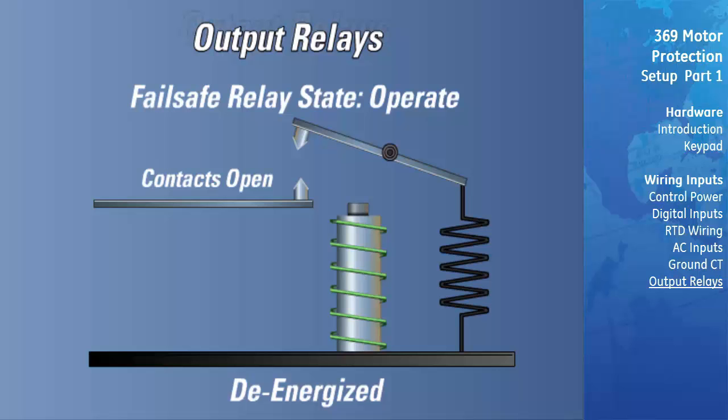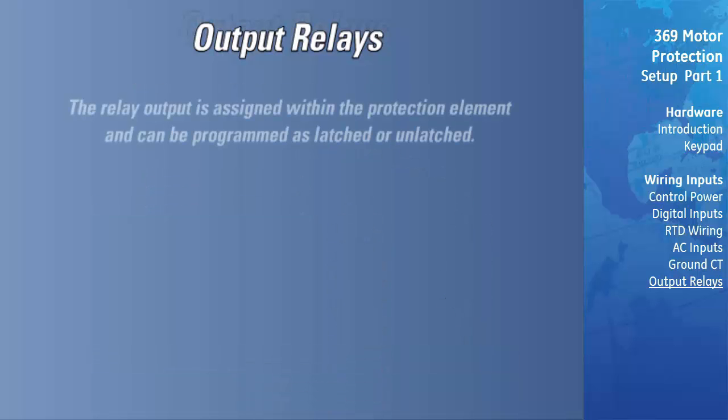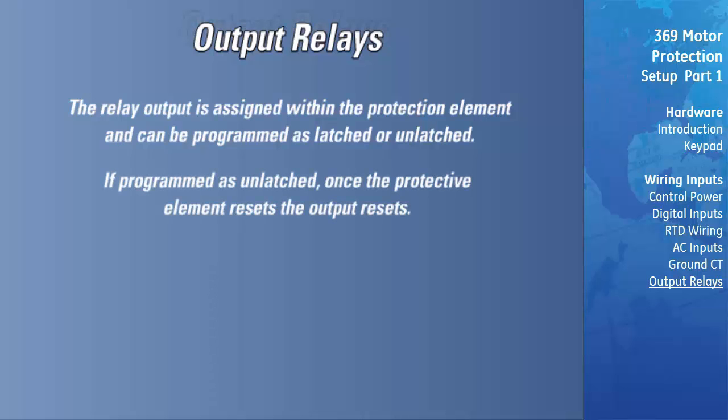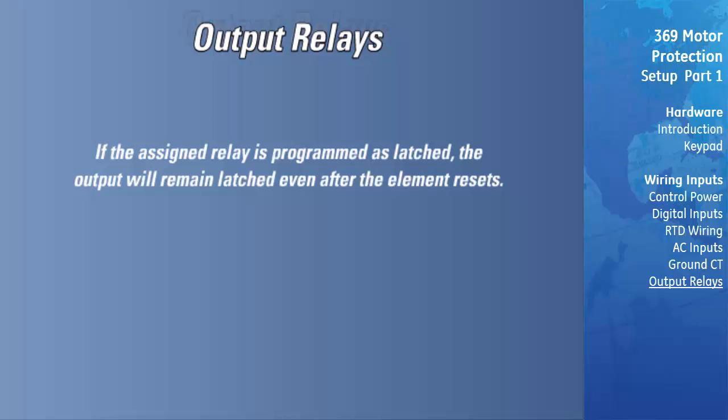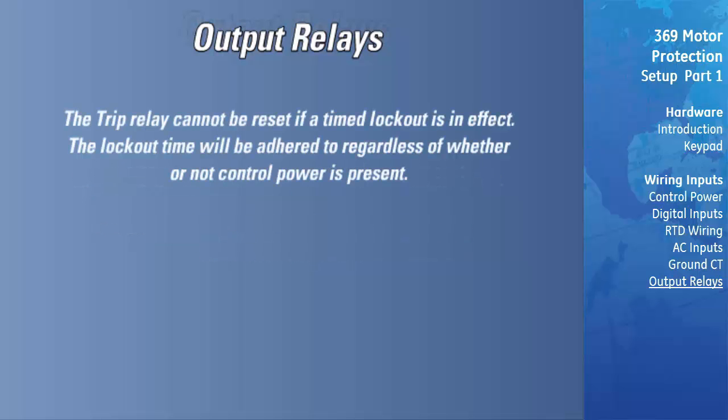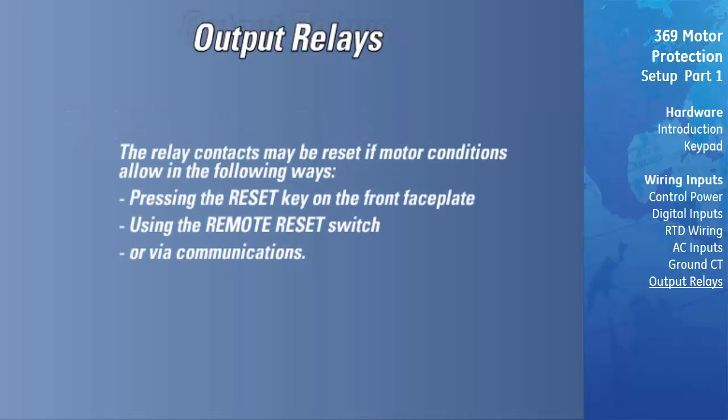Relay Assignment and Operation: The relay output is assigned within the protection element and can be programmed as latched or unlatched. If programmed as unlatched, once the protective element resets, the output resets. If the assigned relay is programmed as latched, the output will remain latched even after the element resets. The output will remain in the active state until the 369 is manually reset. The TRIP relay cannot be reset if a timed lockout is in effect. The lockout time will be adhered to regardless of whether or not control power is present. The relay contacts may be reset if motor conditions allow in the following ways: pressing the RESET key on the front faceplate, using the remote reset switch, or via communications.